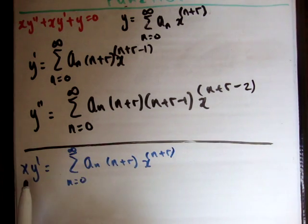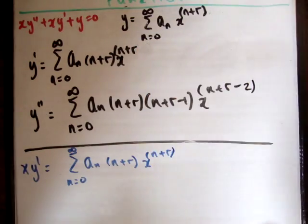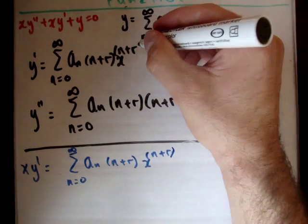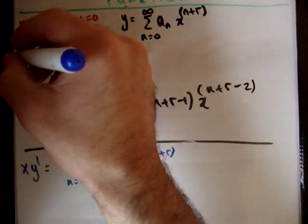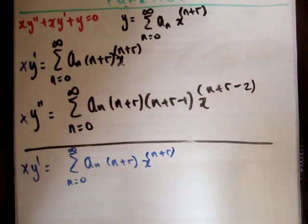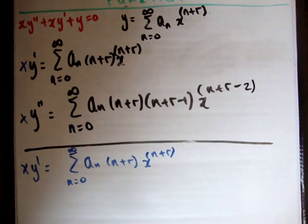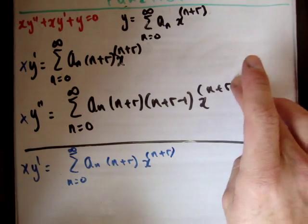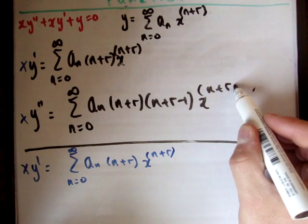So what we see here is that x times y prime is this power series here. So I can get rid of that element here if I multiply by x at the start. So if I do the same thing for the x y double prime, we're going to get that this is going to be equal to negative 1 here.